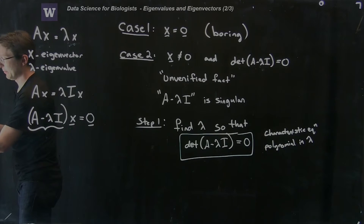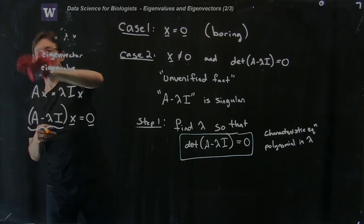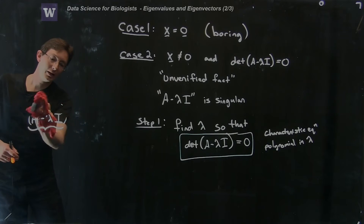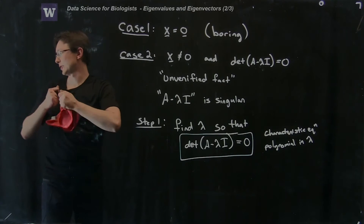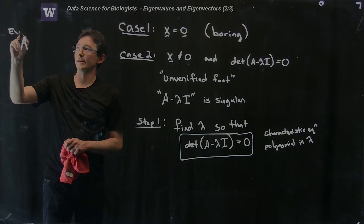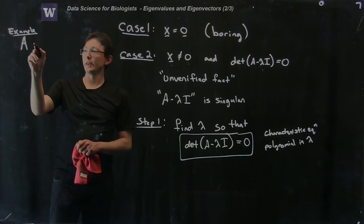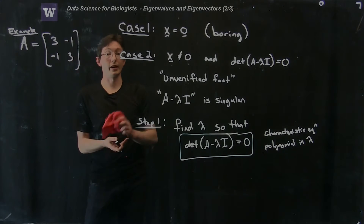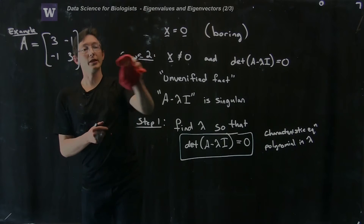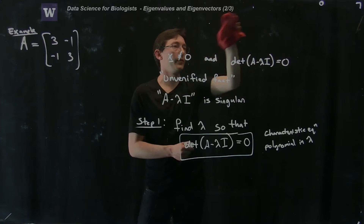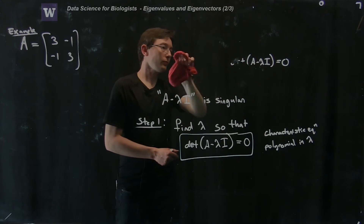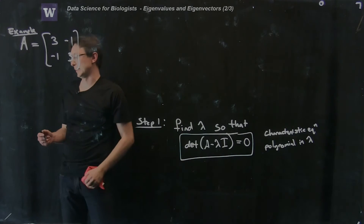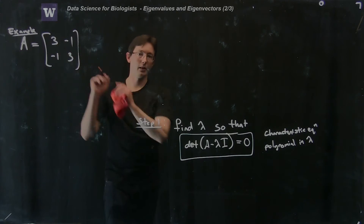So this is step one in solving for eigenvalues and eigenvectors: find special eigenvalues lambda that make the determinant equal to zero. Let's try this out on a simple matrix — the same matrix from last time. We're going to try this on A equals [3, -1; -1, 3]. I'm choosing this because we already know the eigenvalues and eigenvectors from the last part of this lecture. The first thing we do is find the values lambda that make this determinant equal to zero.